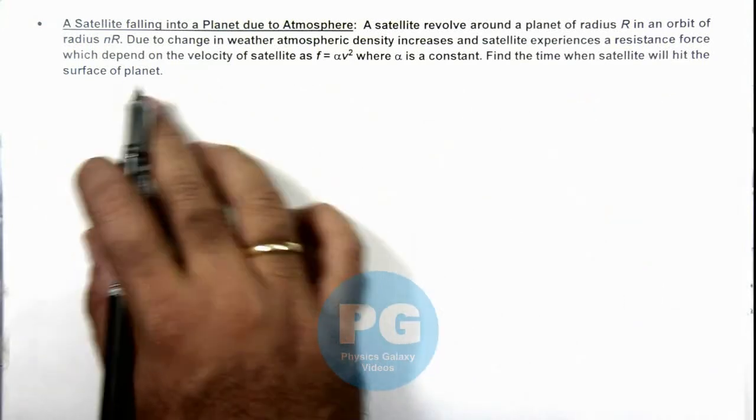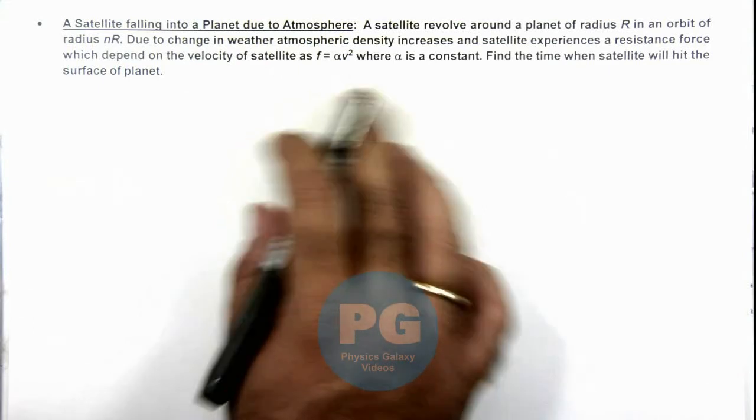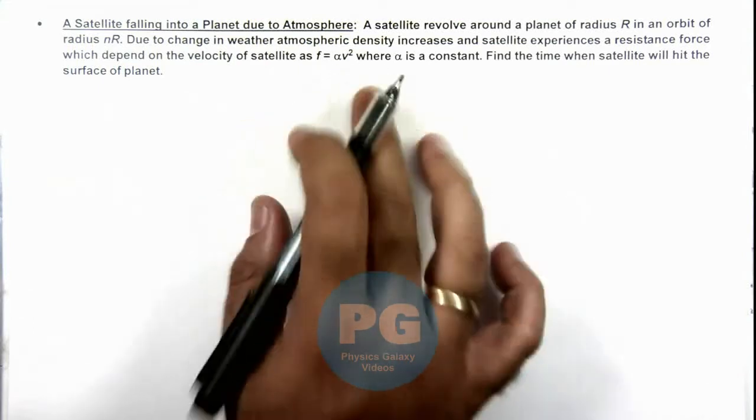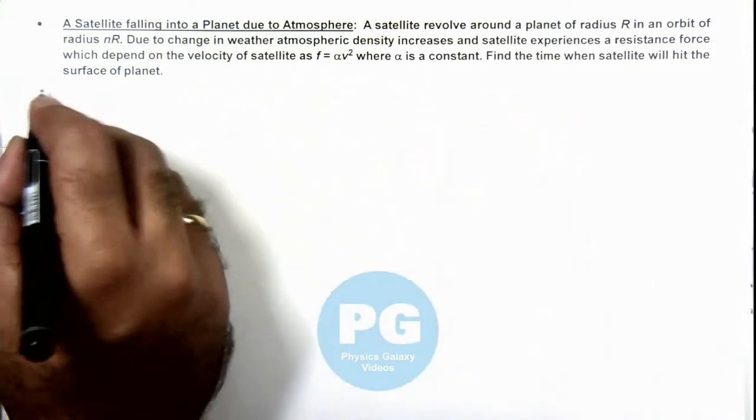This resistance force depends on the velocity of satellite as α v², where α is a constant and v is the speed of satellite. We are required to find the time when satellite will hit the surface of planet.